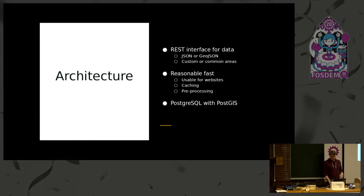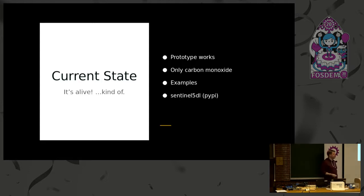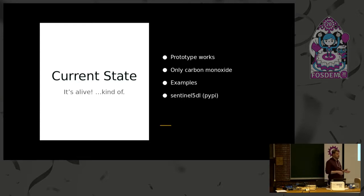We've been working on this since September and we're now in a state where it kind of works. You can check out our homepage and UI — we have a working prototype. At the moment we only have the carbon monoxide data in our database, as that's what we started with, and we still need to add more of the other products. We have a lot of examples on our homepage showing how to use and visualize the data. We also developed Sentinel5DL, a download library on PyPI where you can filter and download Sentinel-5 data automatically.